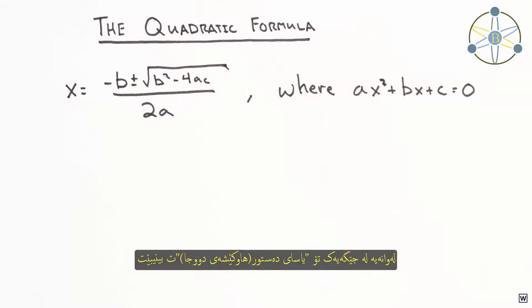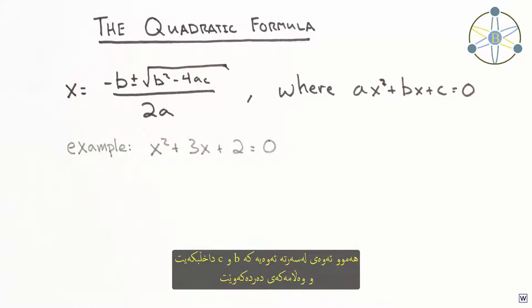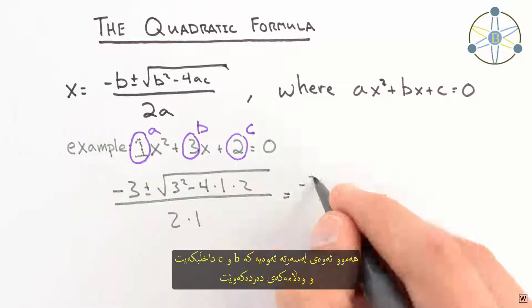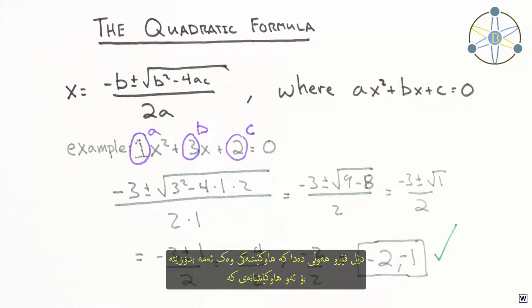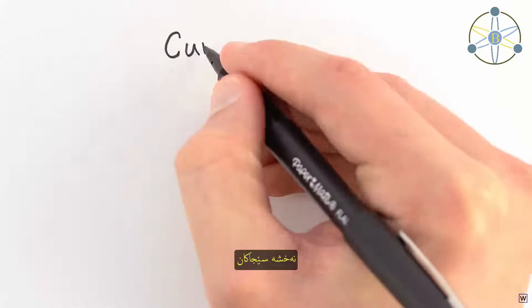At some point, you've probably seen the quadratic formula. This formula is super useful because it gives us the roots of any equation with a highest power of 2. All you have to do is plug in a, b, and c, and out pops the answer. Delferro was trying to find a formula like this for equations with a highest power of 3, cubics.